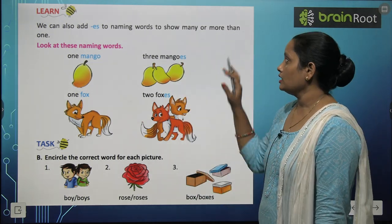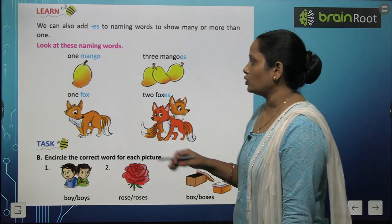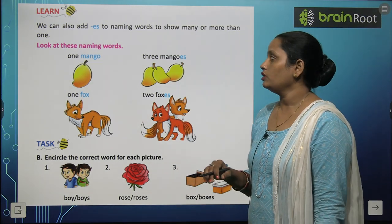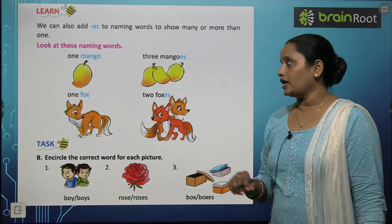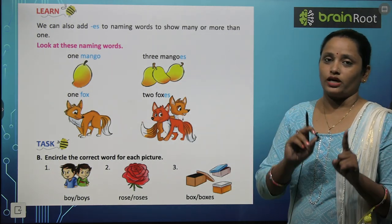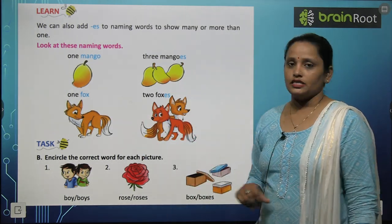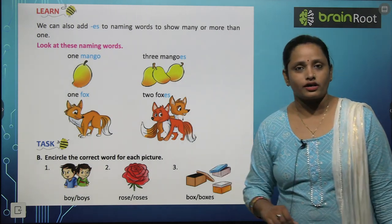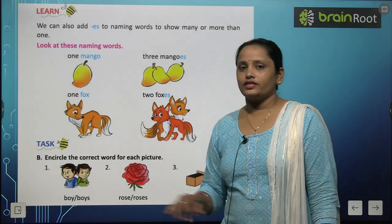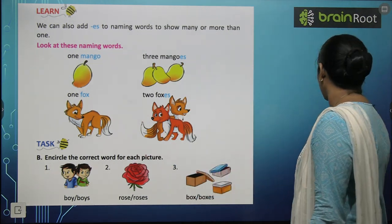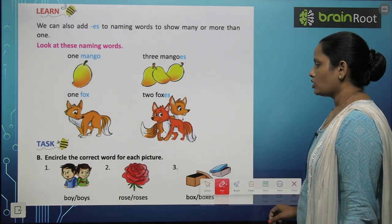We can also add ES to a naming word to convert it to many. For example, yahan par one mango hai — mango ki spelling M-A-N-G-O, mango. Usmein ES laga diya toh three mangoes, means one se teen ho gaye. One fox — ismein bhi ES lagaya toh fox becomes foxes.